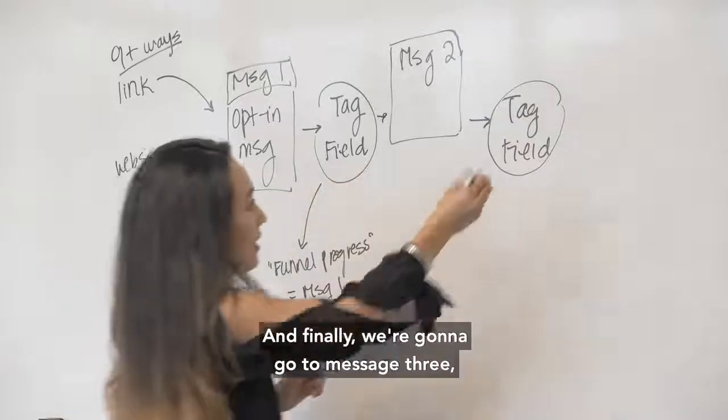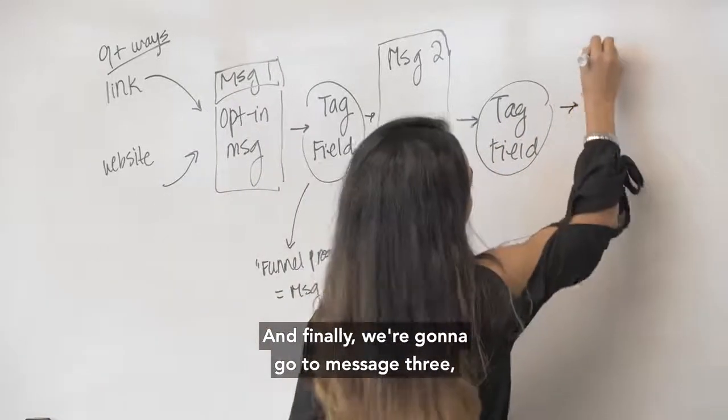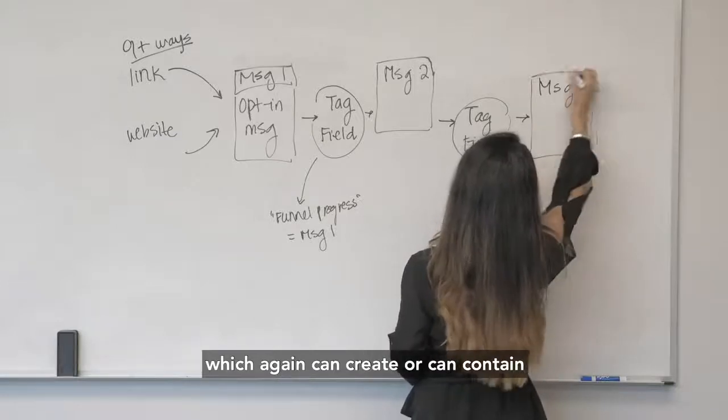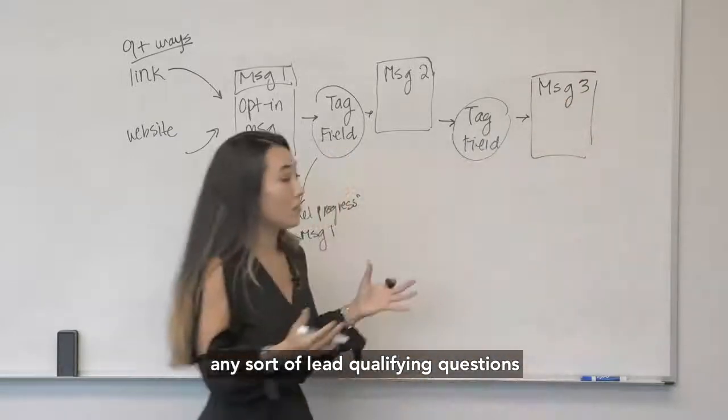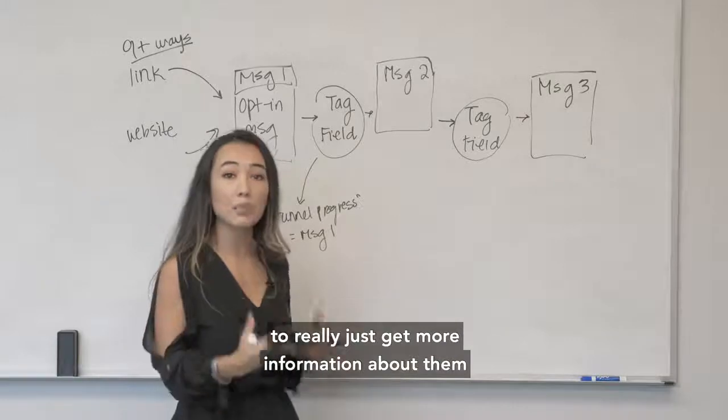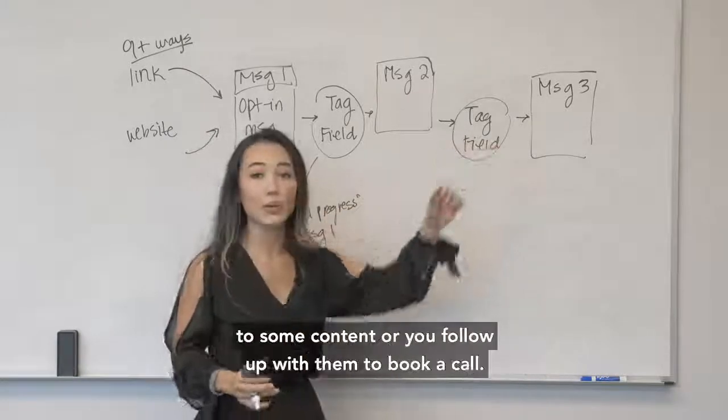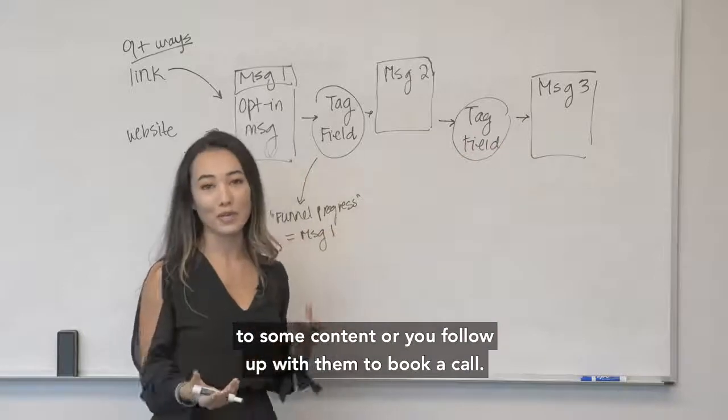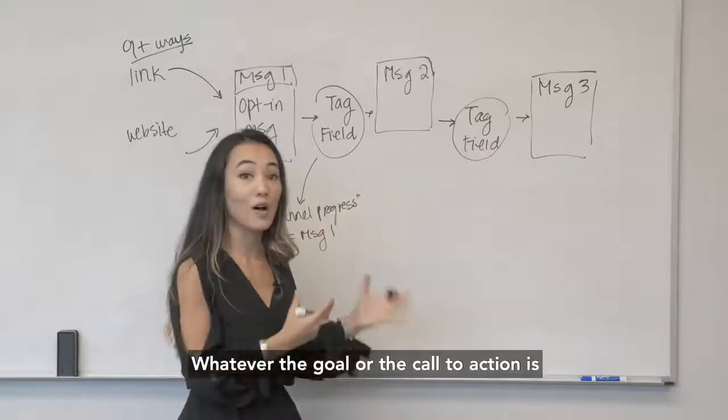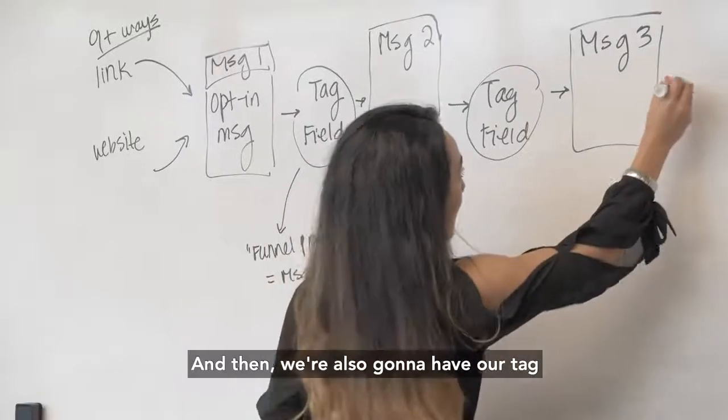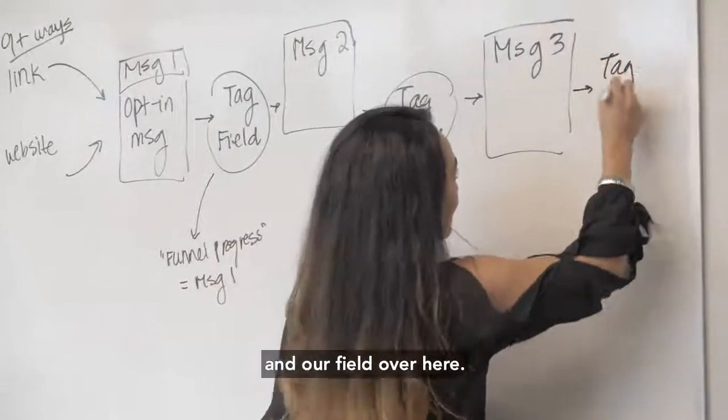Finally we're going to go to message three, which again can contain any sort of lead qualifying questions that you want to ask them to really just get more information about them and understand what they're all about before maybe you send them on their way to some content or you follow up with them to book a call, whatever the goal or the call to action is at the end of the funnel. Then we're also going to have our tag and our field over here.